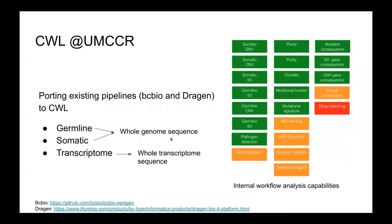Moving on to CWL-specific work at UMCCR, our primary workflows for genome and transcriptome data rely on both BCBio and DRAGEN on AWS, but generating clinical reports from high throughput sequencing data requires slicing and dicing of data through various steps. To achieve reproducibility and portability as discussed, we are in the process of transitioning to CWL for our main workflows and analysis.